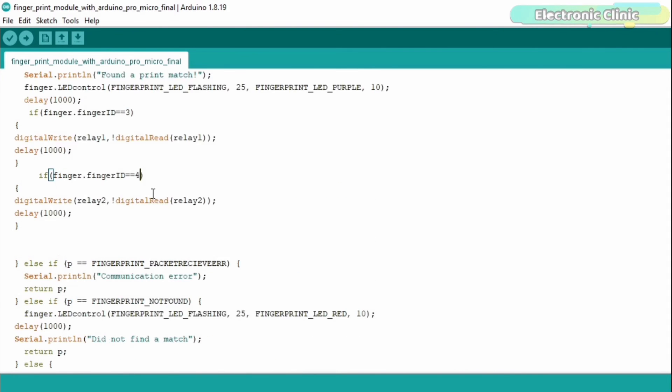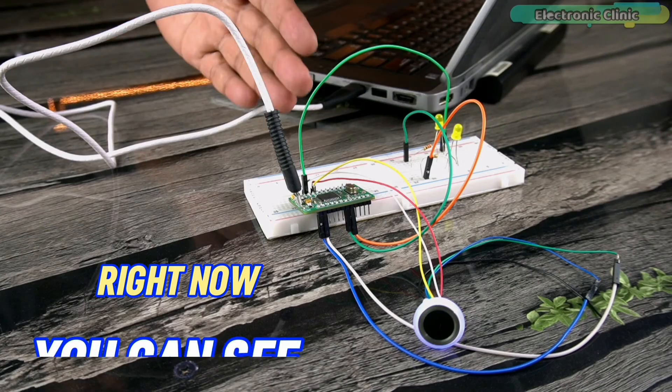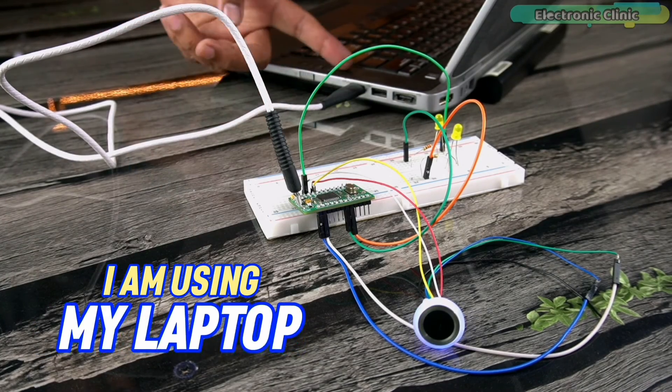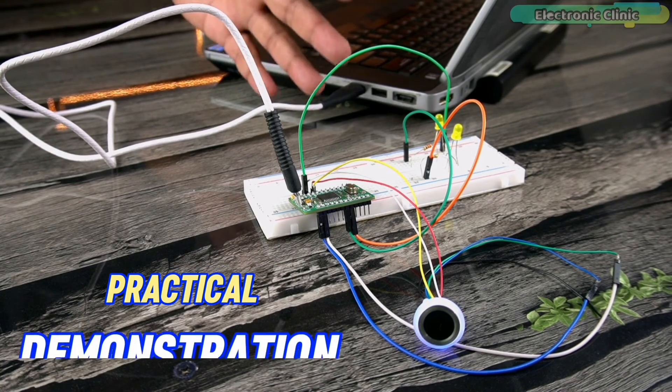I have already uploaded this program and now let's watch this capacitive fingerprint sensor and Arduino Pro Micro in action. Right now, you can see I'm using my laptop as the voltage source. Anyway, it's ready and now let's go ahead and start our practical demonstration.